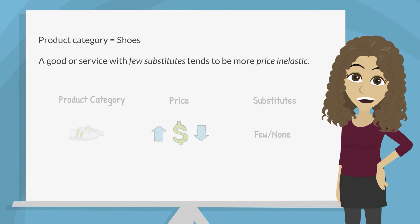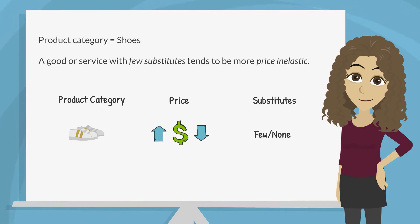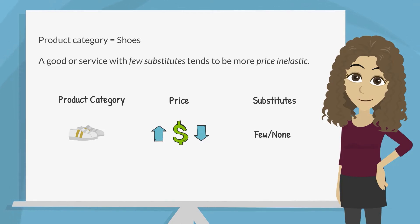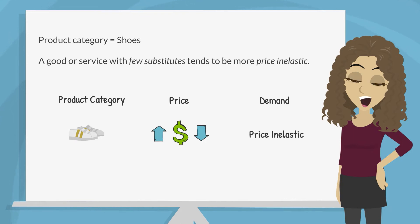For example, consider shoes in general — a product category. If the price of shoes rises, that is, all shoes cost more, there are few substitutes for shoes, so you and most other consumers will likely still buy shoes in spite of the price increase. In economic terms, consumers will not be very sensitive or responsive to price changes. So the demand for shoes will likely be price inelastic — it will stay relatively the same.